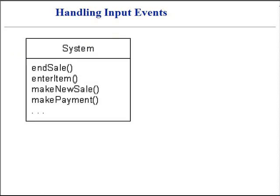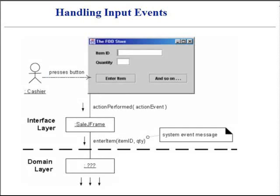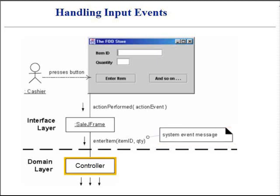In the point-of-sale application, there are several system operations showing the system itself as a class or component. The diagram shows system operations which are associated with the system events. Who should be the controller for system events such as enter an item? Also, who should be controller of the end-of-sale event? Which class should be responsible for receiving the system event message? It is sometimes called the controller class, or coordinator. It does not normally do all of the work, but instead delegates tasks to other objects.